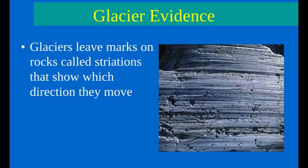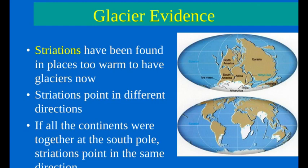When a glacier scrapes against rocks, it leaves deep gouges in the surface called striations. Striations can also indicate the direction the glacier was moving. Striations have been found in places that are too warm to have glaciers now, and the only way these areas could have had glaciers is if they were once much farther away from the equator.